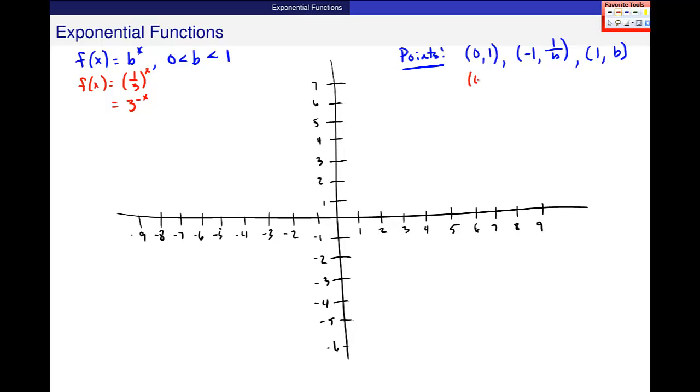So in this case, I got 0, 1, negative 1, and 1 over 1 third is the number 3, and 1 and 1 third. So when I put those numbers on this graph, I get kind of a reversal. And you should have seen kind of the same. I still get a horizontal asymptote here. There's no vertical asymptote in these graphs. Horizontal asymptote at y equals 0. Here's my y-intercept. 0, 1 is the y-intercept.